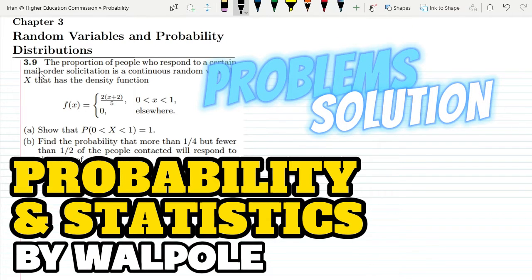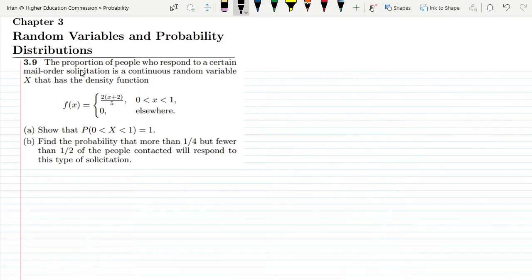Welcome back guys, this is question 3.9. The statement is: the proportion of people who respond to a certain mail order solicitation is a continuous random variable X that has the density function f(x) which is (2x + 2)/5 for the range 0 < x < 1, and 0 elsewhere.